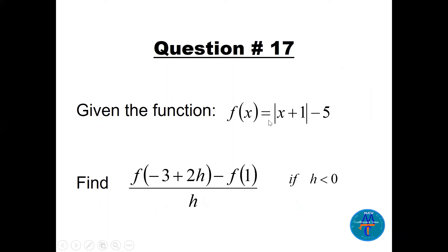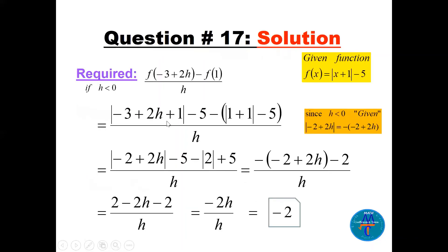This question involves the function f(x) = |x + 1| minus 5. Be careful: replace x with (minus 3 + 2h), then also evaluate f(1), given that h < 0. After substituting and simplifying, inside the absolute value we get minus 2 + 2h. Since h is negative, minus 2 + 2h is negative, so we put a minus sign outside the absolute value, simplify, and cancel to get minus 2.